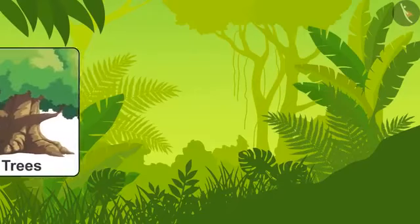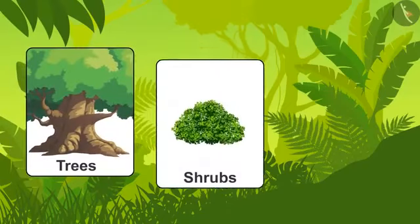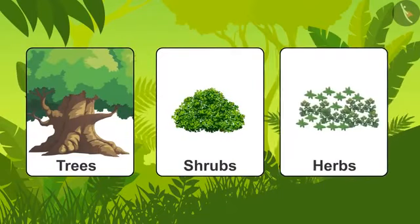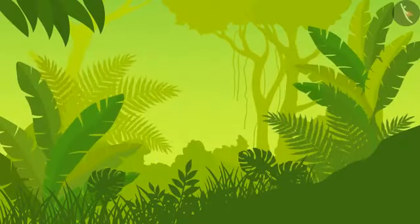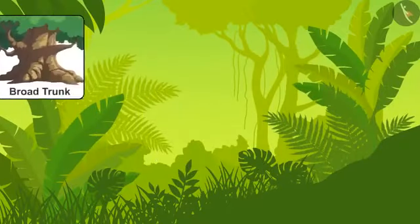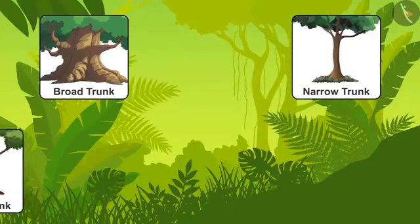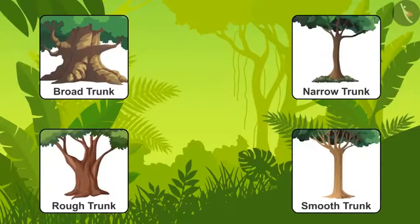Trees are plants which are large and which have a strong trunk. Smaller than trees are shrubs. Smaller than shrubs are herbs. Now let's focus on trees. Some tree trunks are broad, some are narrow. Some tree trunks have a rough surface and some are smooth.